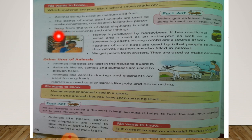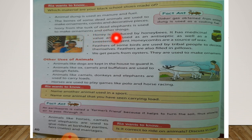Next, ivory. What do you mean by ivory? Ivory is a hard, creamy white substance composing the main part of the tusk of an elephant. Ivory from the tusk of dead elephants is used to make ornaments and other things.